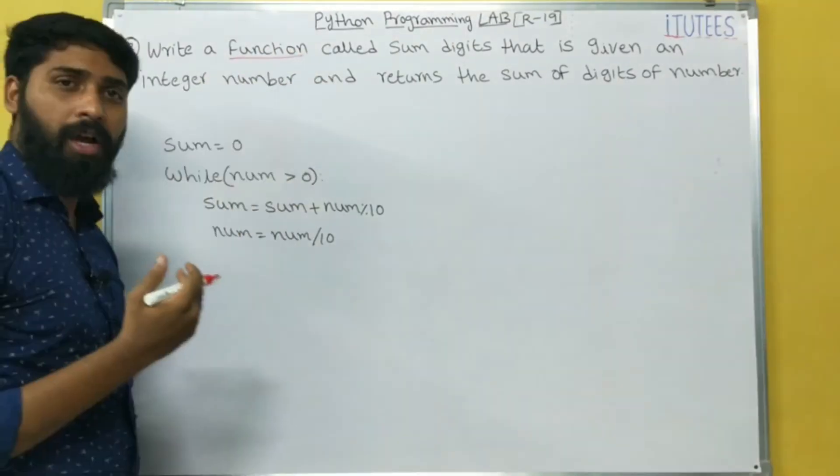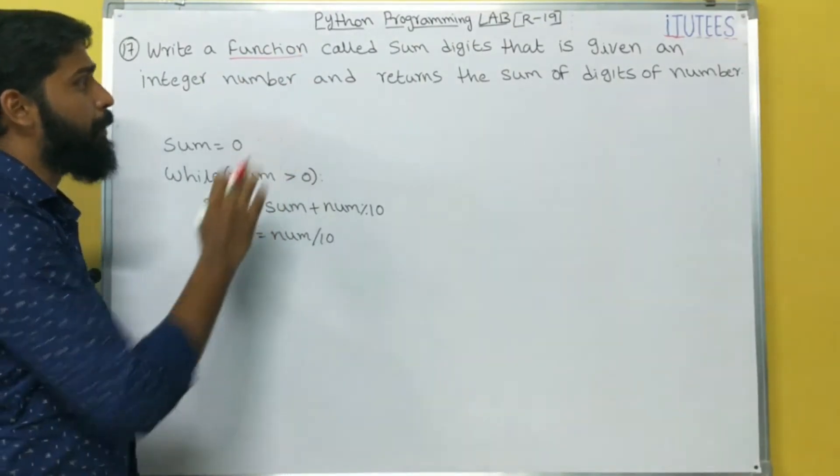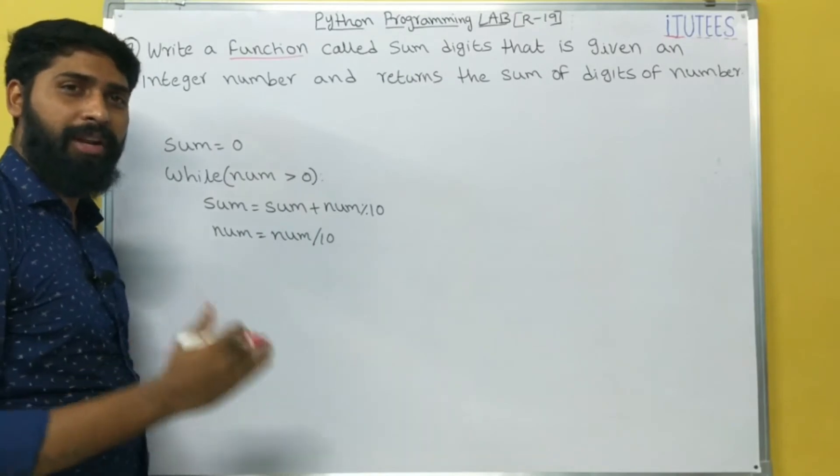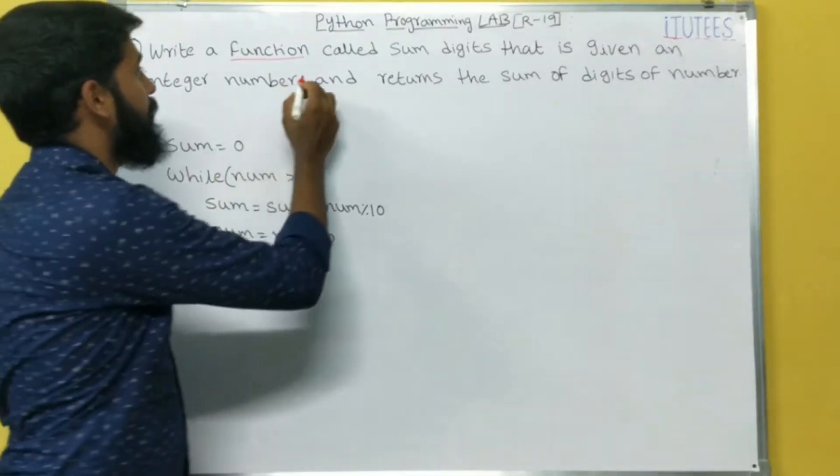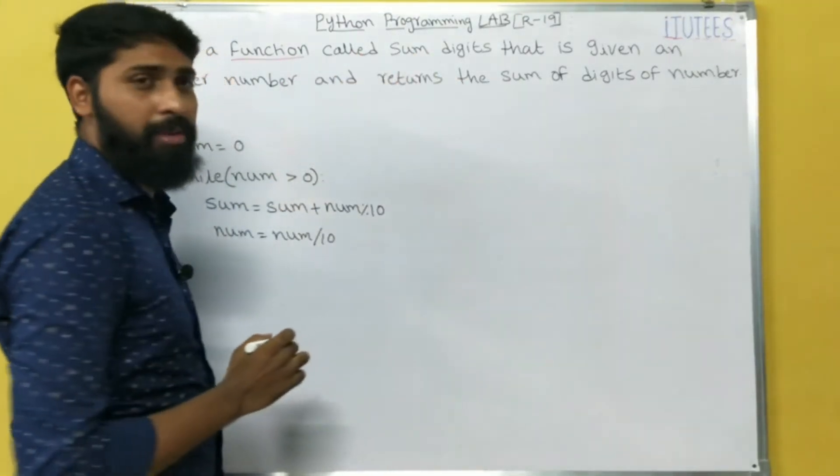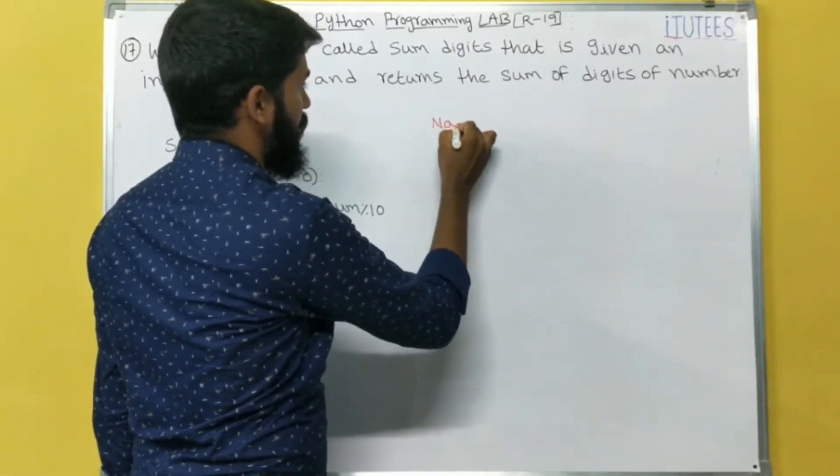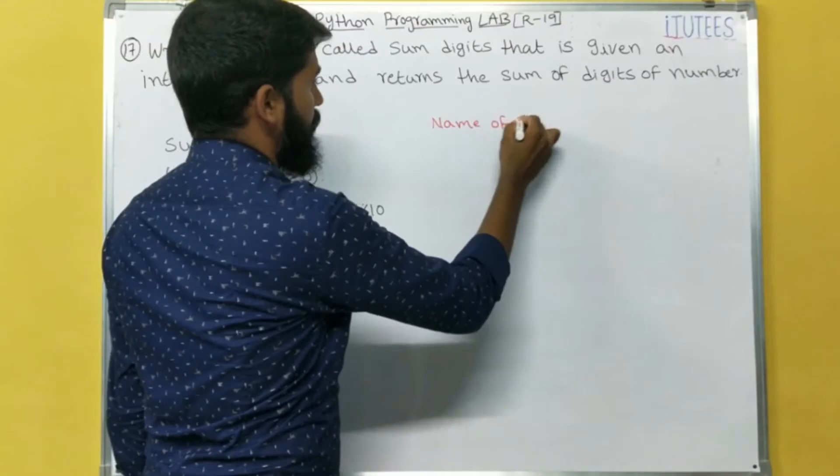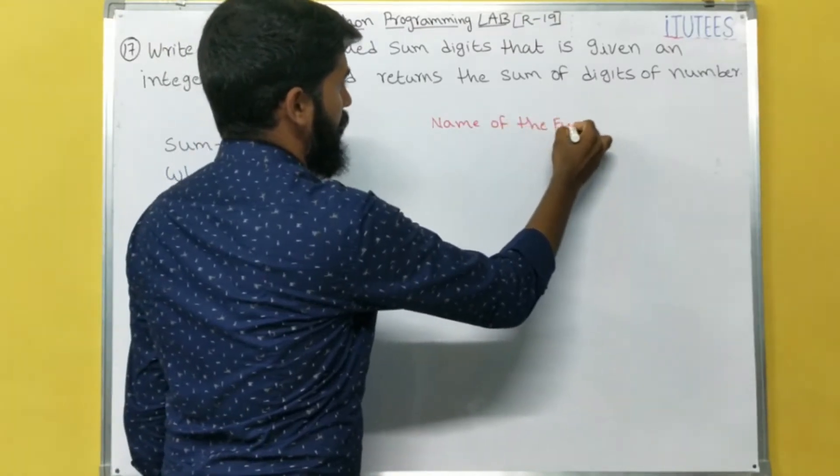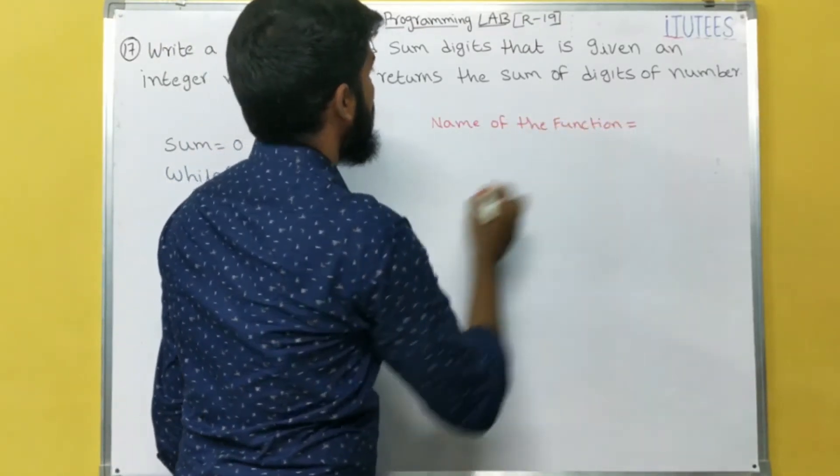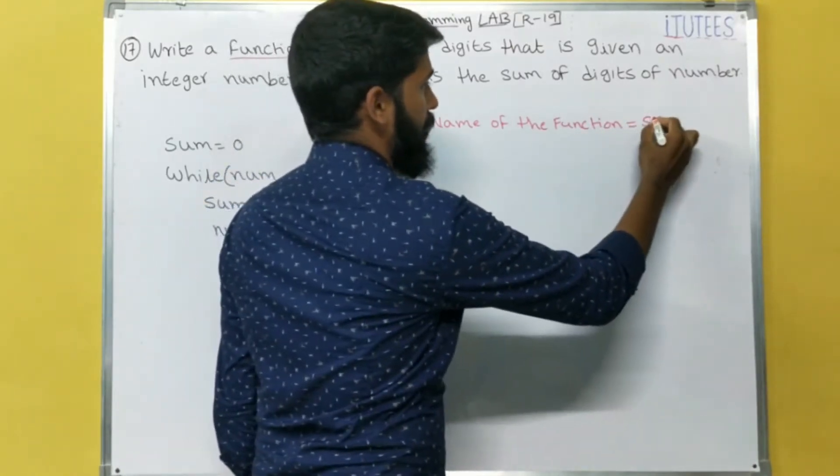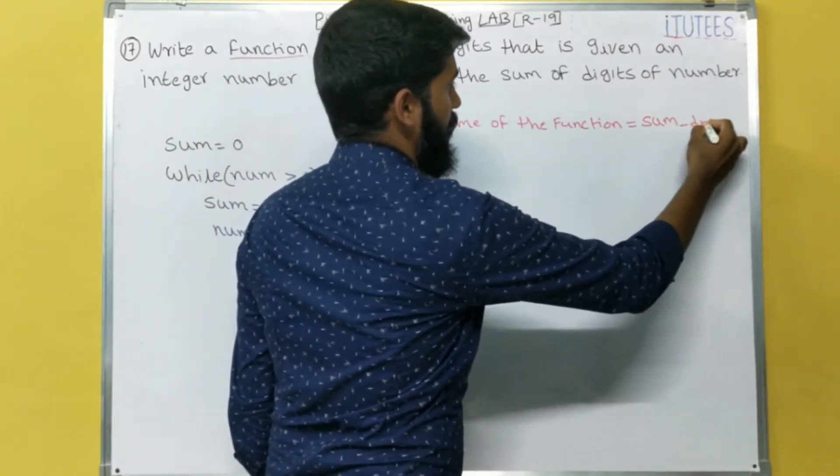So write a function. Up to now we see the programs. Here we are going to write the function, function called sum digits. So that means the name of the function is sum_digits.